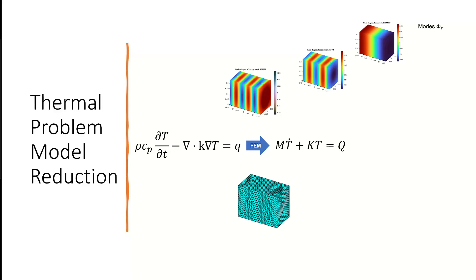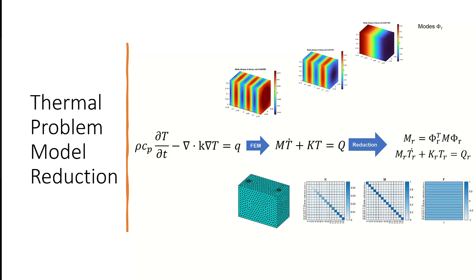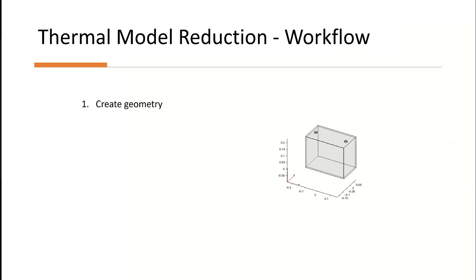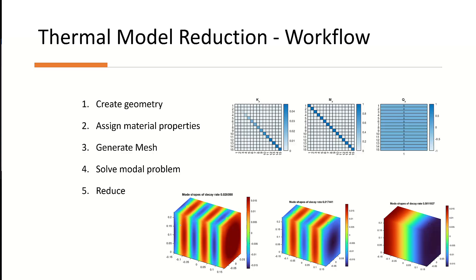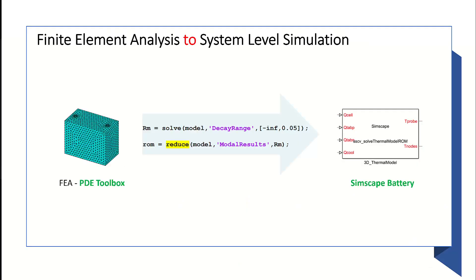We can then write it in model form so that a function can reduce it to an order adequate for system level simulation. The finite element modeling workflow includes creation of geometry, assignment of material properties, mesh creation, and solving and reducing the equation. The equation produced by the FEA tool takes several physical and chemical properties into consideration. We then pass this reduced order model from the PDE toolbox to Simscape for system level simulation and find the temperature distribution across the cell.